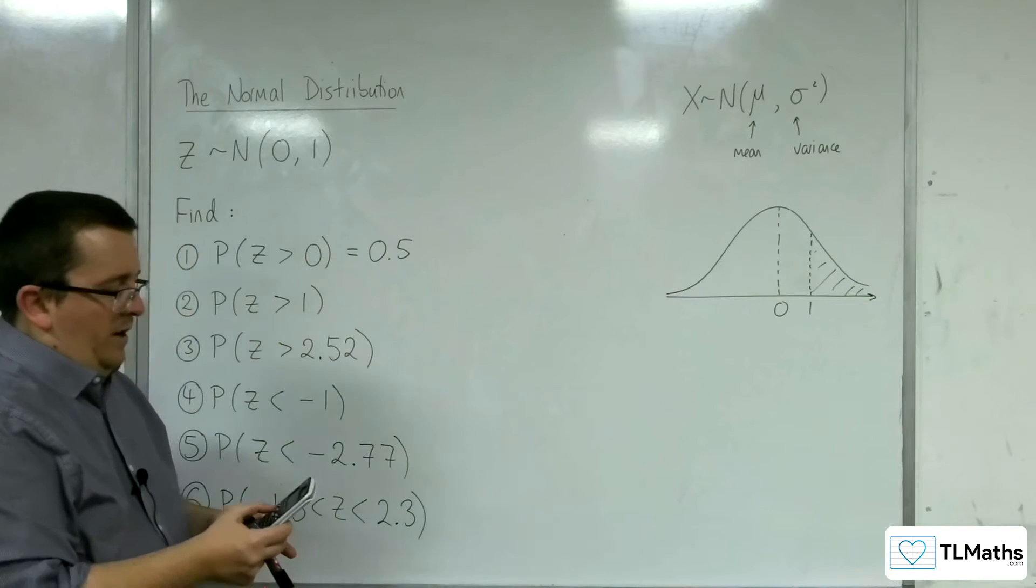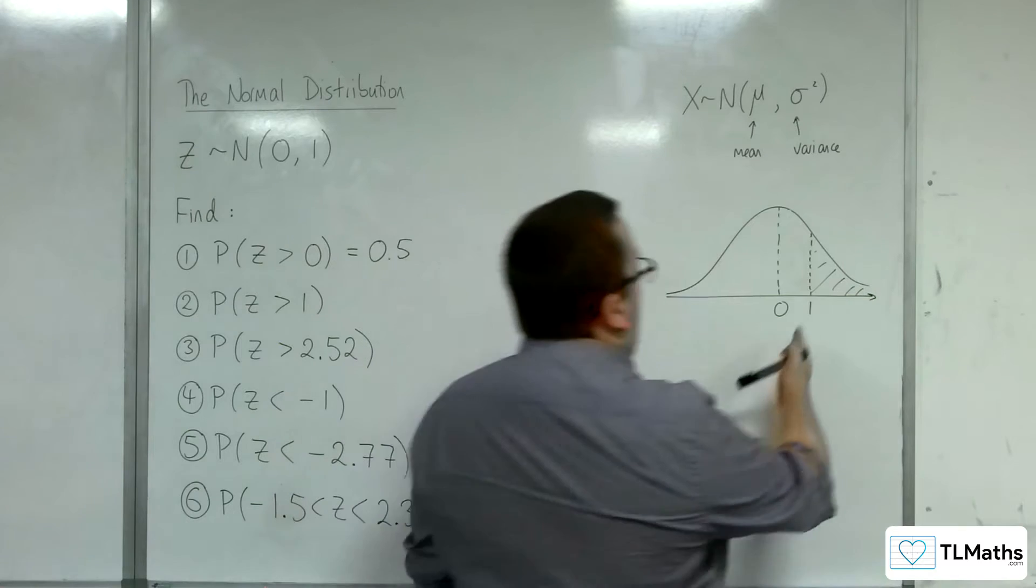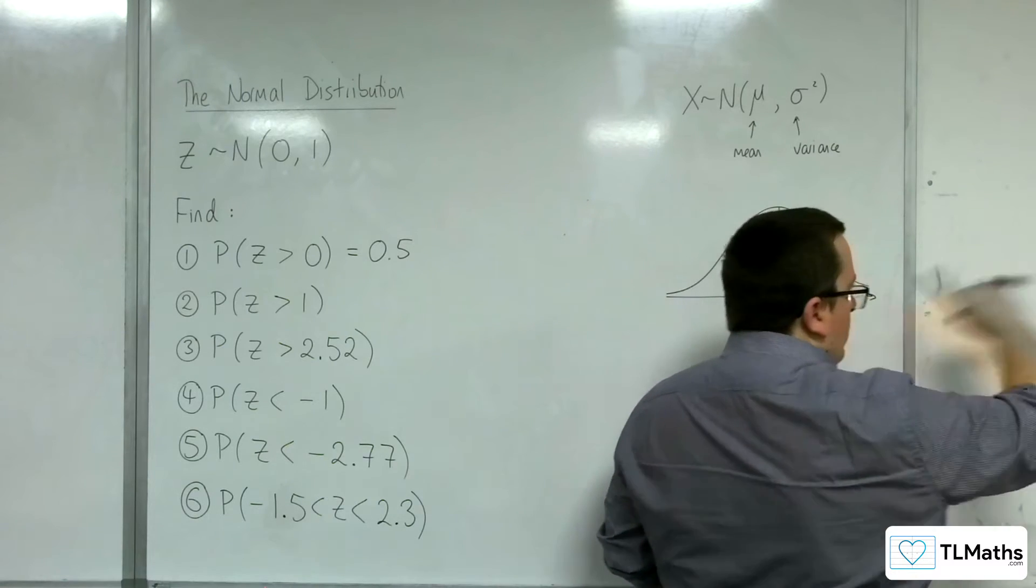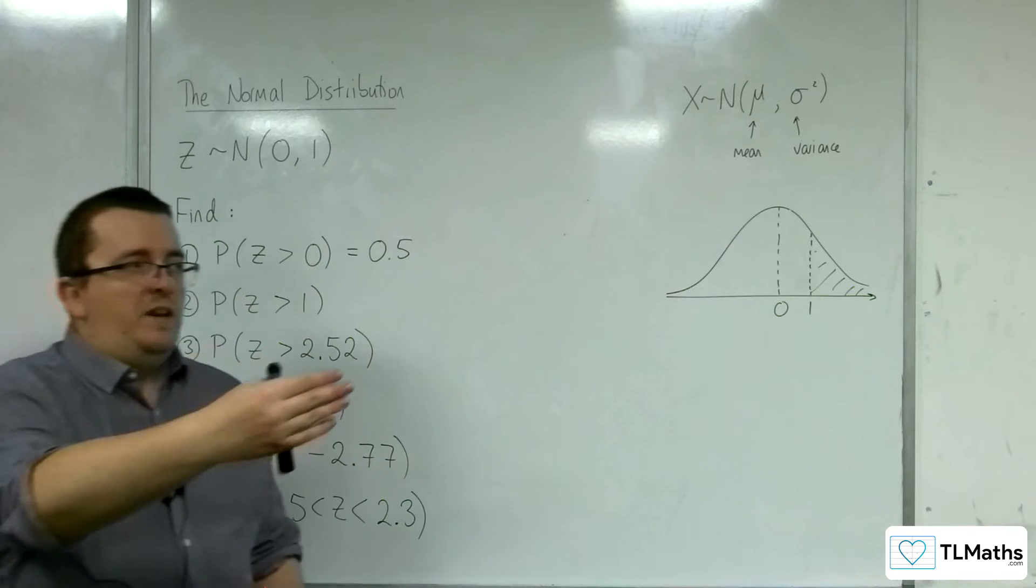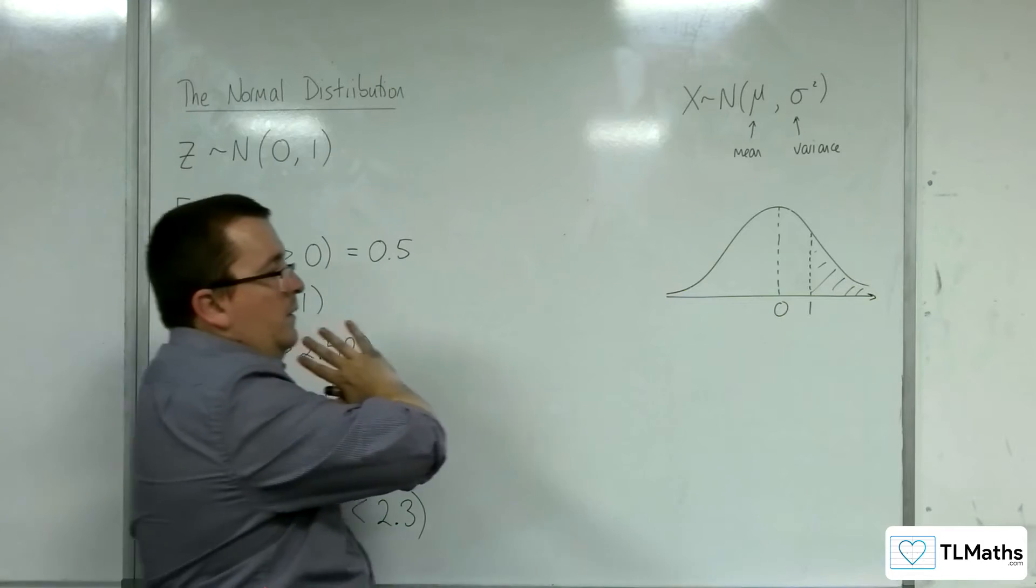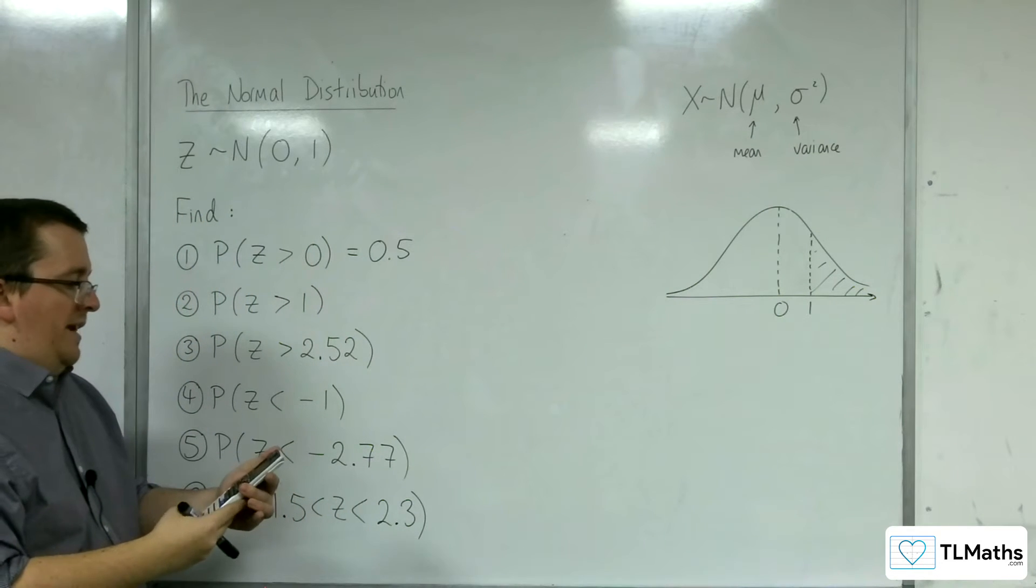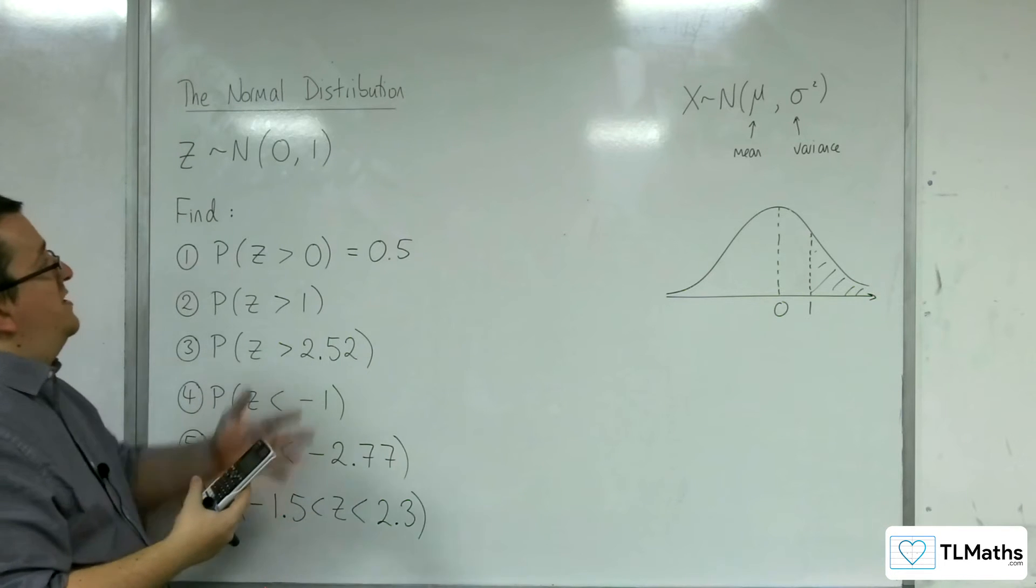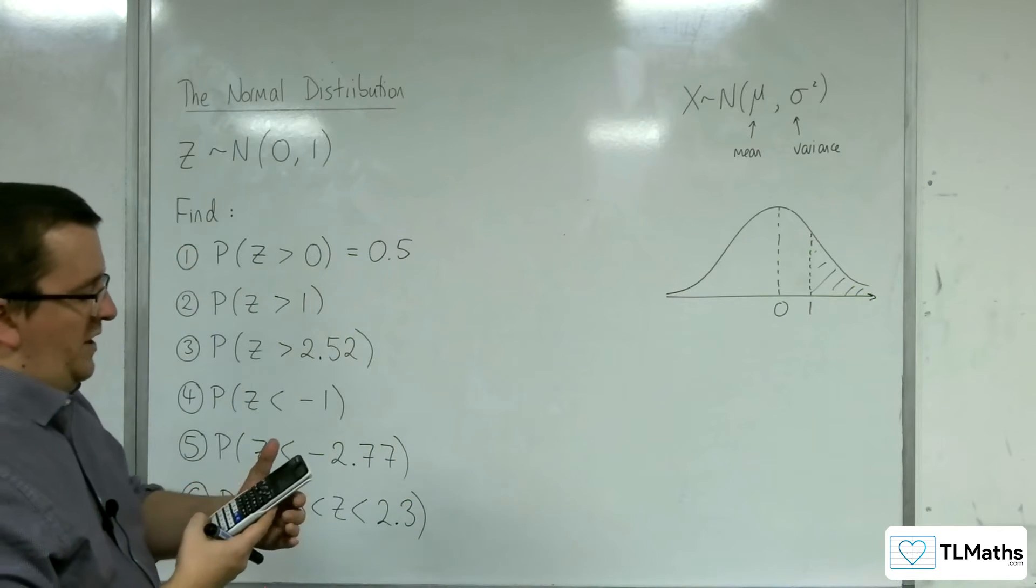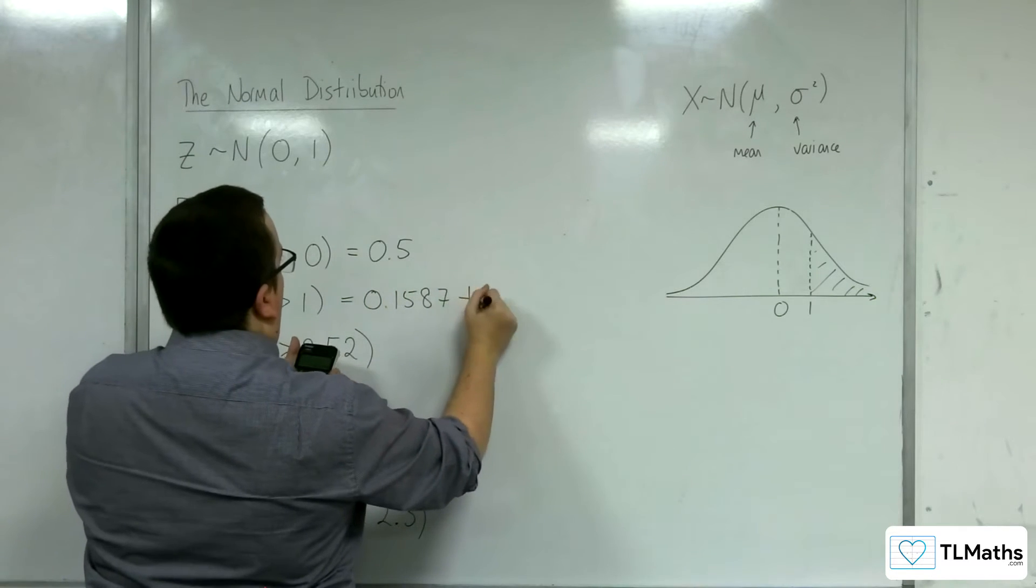So we go to menu and we go to number 7, and normal CD, remember, number 2. Now the lower value this time is at 1, so the left-hand value is 1. The upper value is a very large number, as far in that direction as you really need. So in the previous video we went for minus 100, but now we're in that direction, so we want a large positive value. So I'd use 100. That's my upper value. The sigma is the standard deviation, which is the square root of 1, which is just 1, so that stays as is. And the mean is 0. Press equals. And you should get 0.1587 to 4 decimal places.